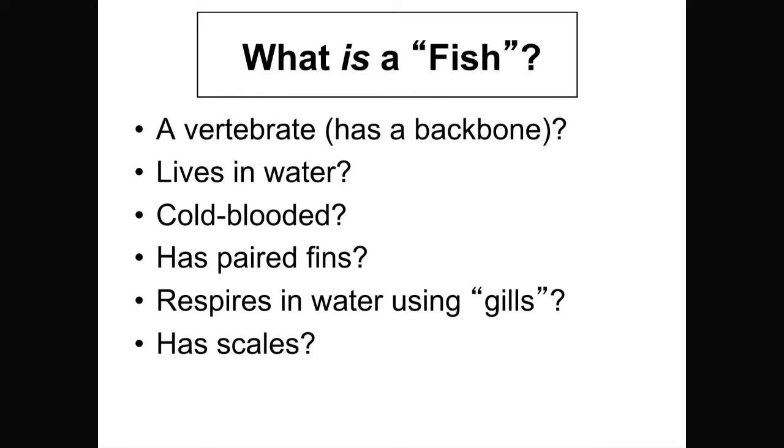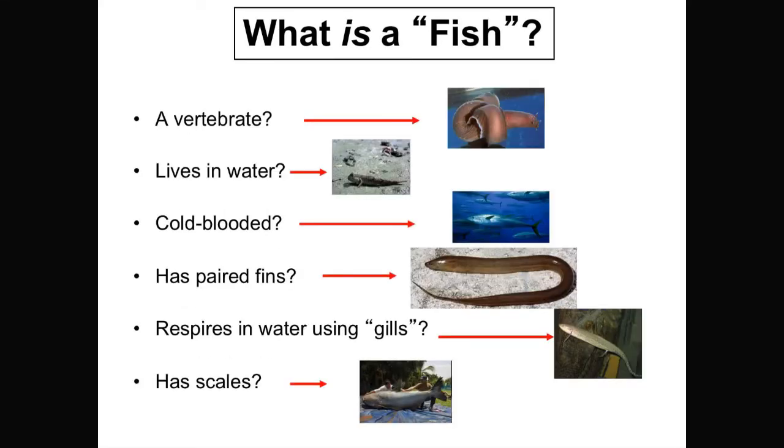Typically, they're vertebrates. They have a backbone. Typically, they live in water. Typically, they're cold-blooded. Typically, they have paired fins, pectoral fins and pelvic fins. They typically respire in water using gills, and they typically have scales. The one word I said in every one of those phrases was typically, because there are exceptions to every single one of those things that we classically think of as being characteristic of a fish.